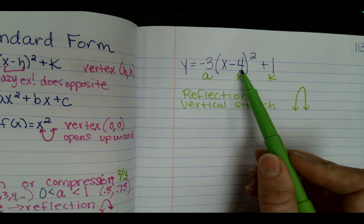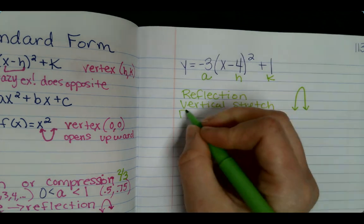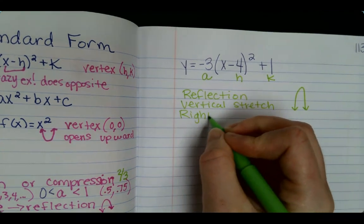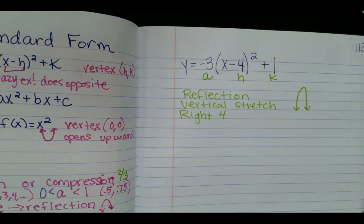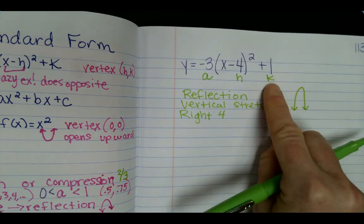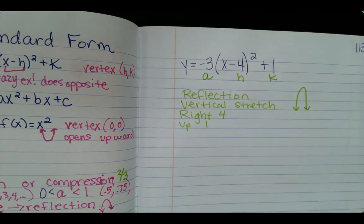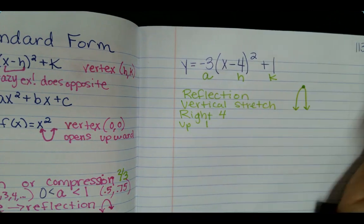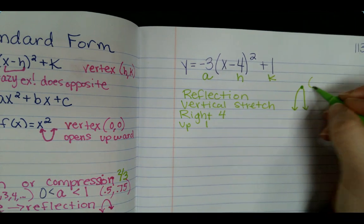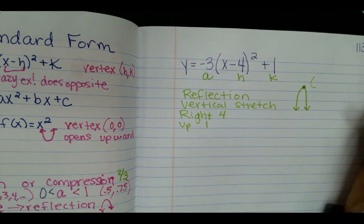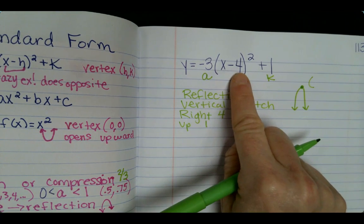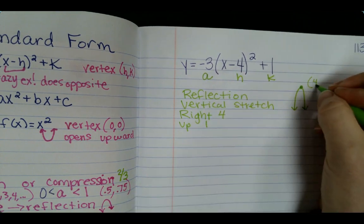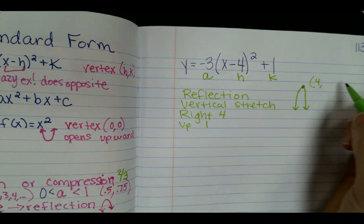Minus 4, we would think it goes left, but it's crazy so it goes right 4. And then the k determines the up and down, so since it says plus 1 it means up 1. We can also find our vertex right here. That coordinate is h,k so it's a crazy x so it's going to be a positive 4, and then k is 1. So the only one that's crazy is the x, the opposite of what it says in the parentheses.